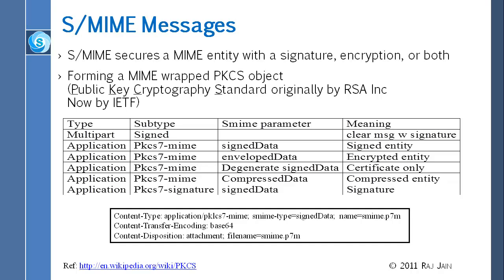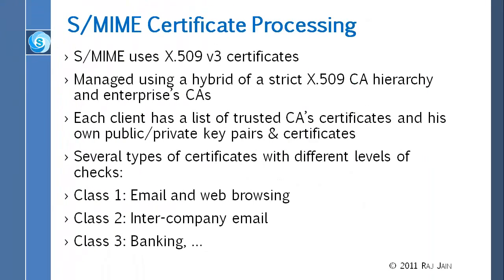S-MIME uses X.509 certificates, and it uses a hybrid of strict certificate authority and enterprise CA. What happens is, if you work for a company like IBM, they don't want to go to an external CA for every certificate and pay money — they can issue their own certificates inside the company. Each client has a list of trusted CAs and their own certificates. There are several types of certificates at different levels: class 1 is for email and web browsing, class 2 for inter-company mail, class 3 for banking, and so on.